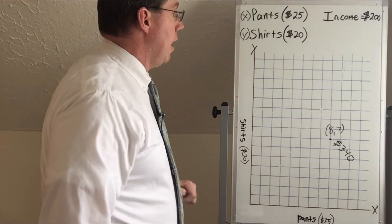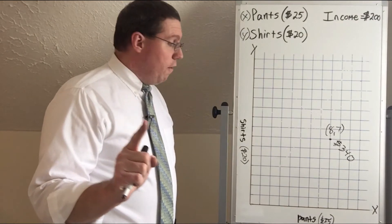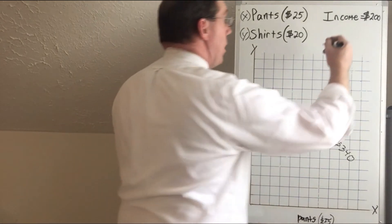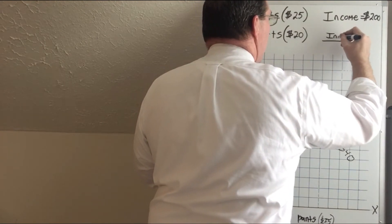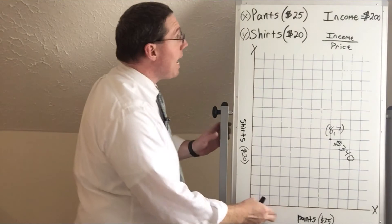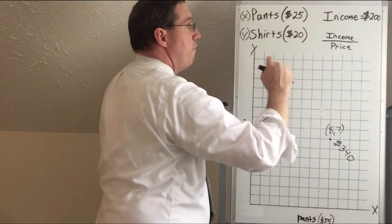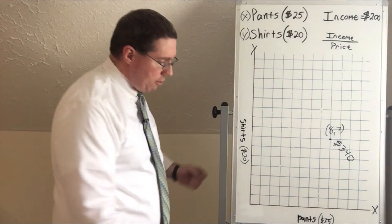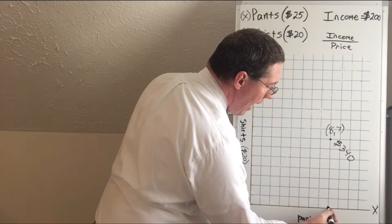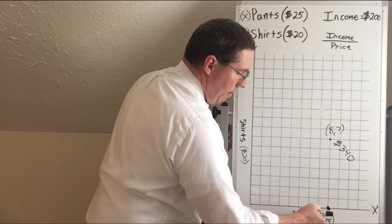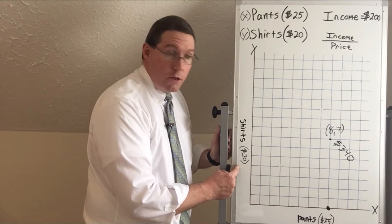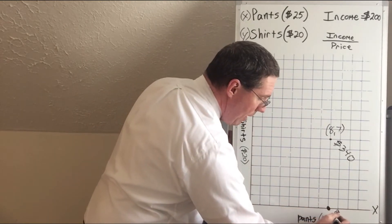The way we draw a budget line is to divide income by price for each axis. For pants, we divide $200 by $25, which equals 8. So we go from the origin one, two, three, four, five, six, seven, eight, and put a dot on the x-axis. That represents purchasing all pants and no shirts — the point (8, 0).